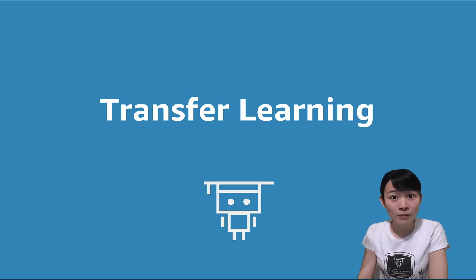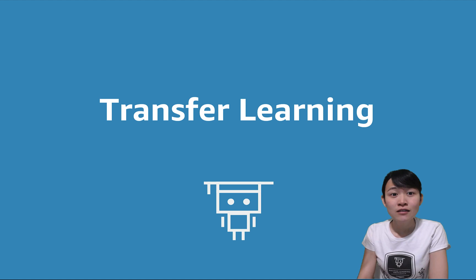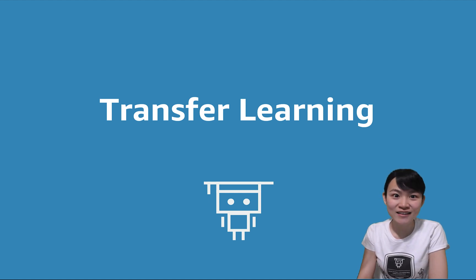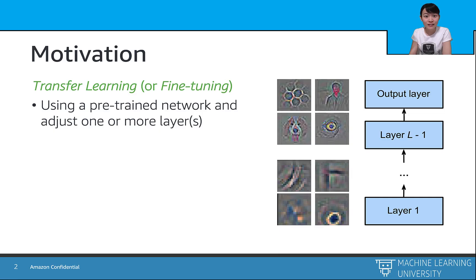We have seen several complex neural networks so far. Some of them may have millions of weight parameters that we need to train on. So can we reuse the weights that have been trained before? And the answer is yes, and that's the idea of transfer learning. Transfer learning is a technique that allows us to save time and computational cost by using some pre-trained models instead of training from scratch.